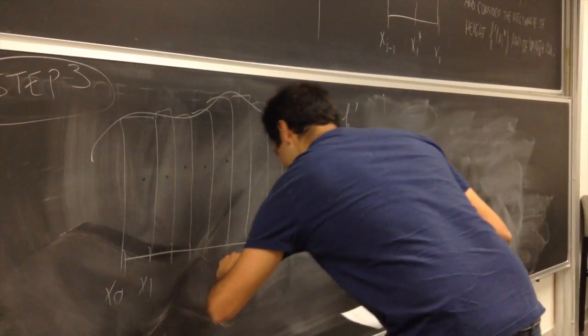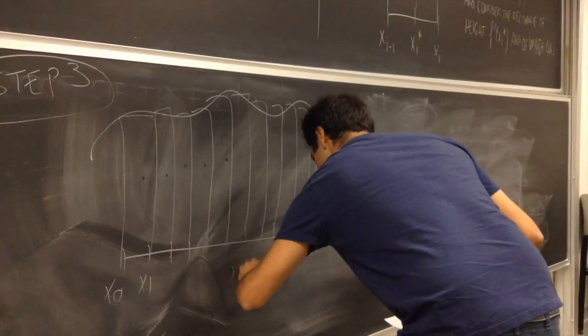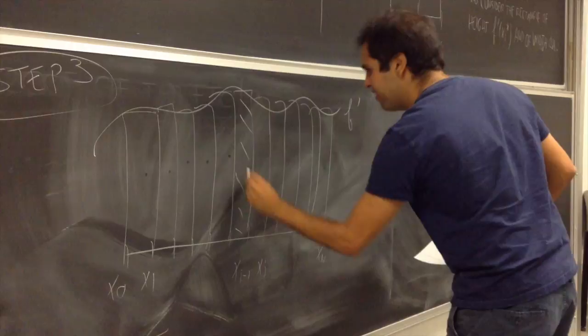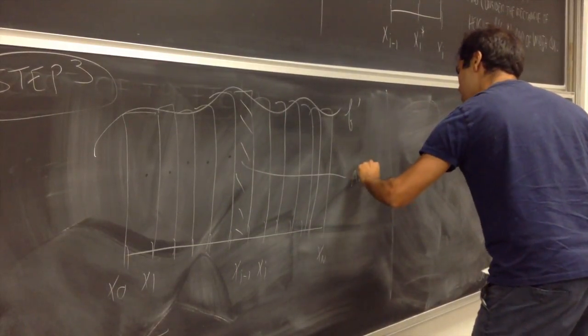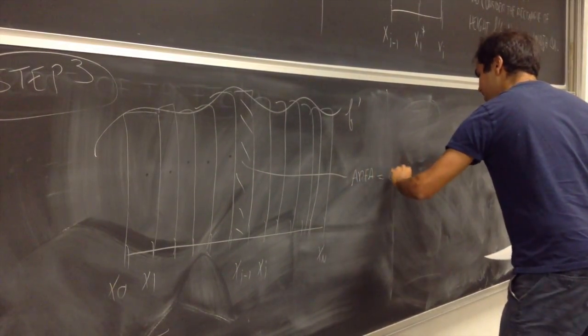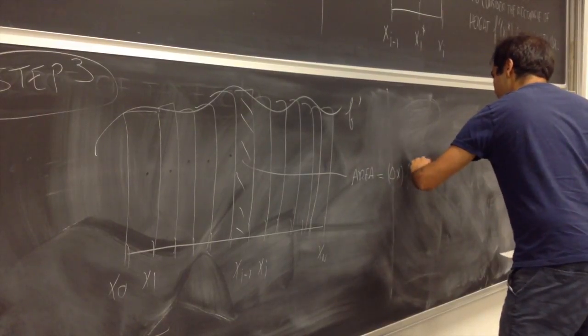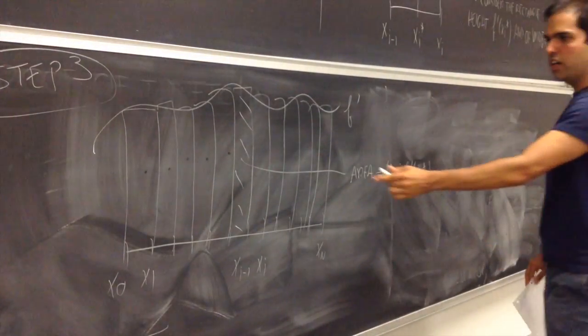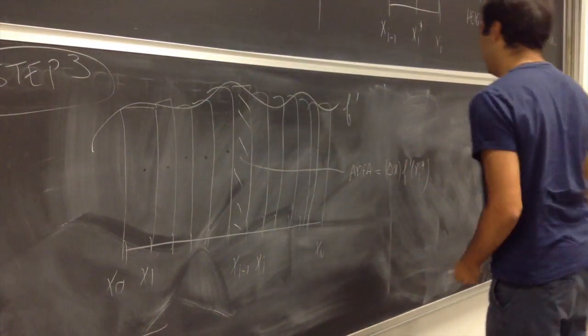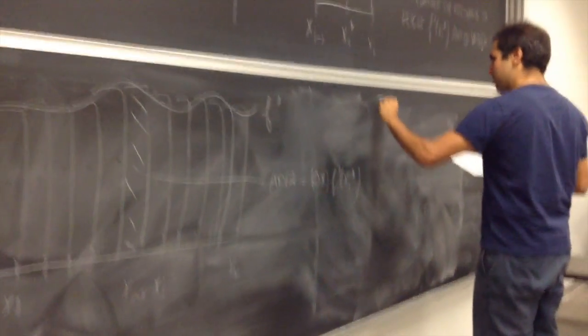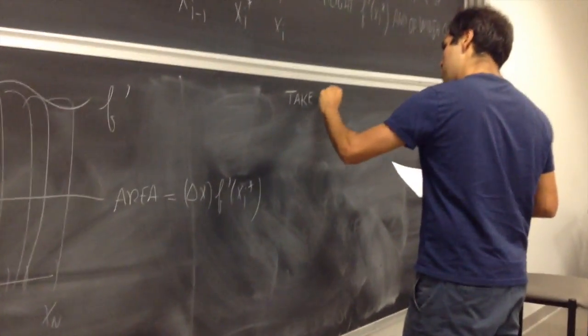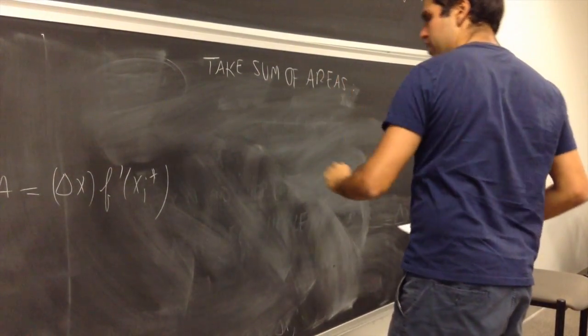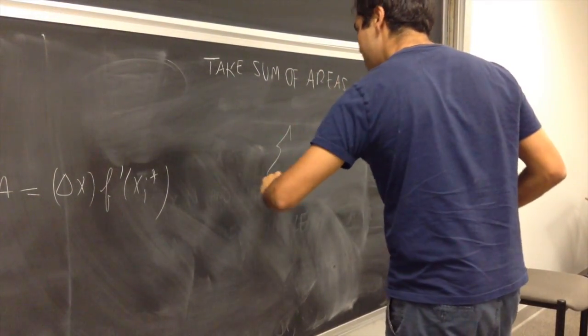And, the point is, this is supposed, as I said, this is supposed to be a very good approximation of the area under f. So, what you really want to approximate the area is, you want to take the sum of the areas of each rectangle. So, x0, x1, xi minus 1, xi, xn, and remember, as I said, the area is delta x times f prime of xi star. So, now, to get the total area, what you want to do is, you sum all those rectangles. So, take sum of areas.